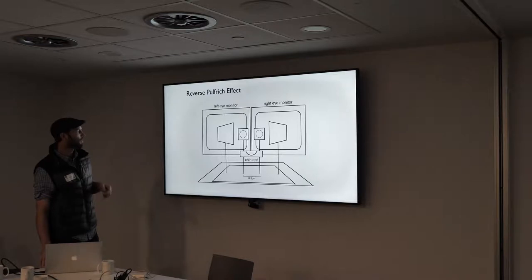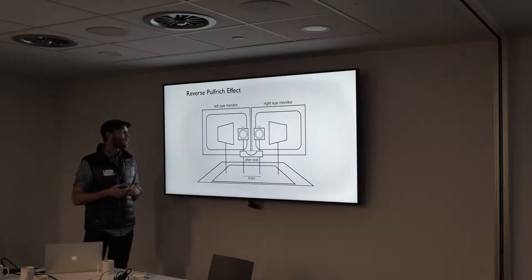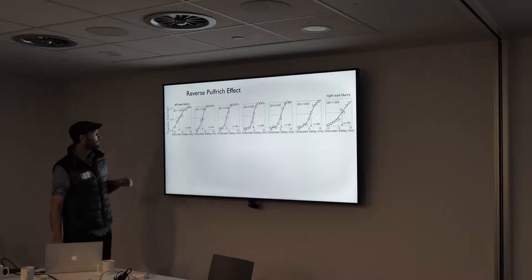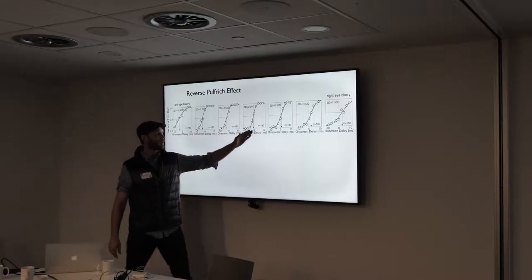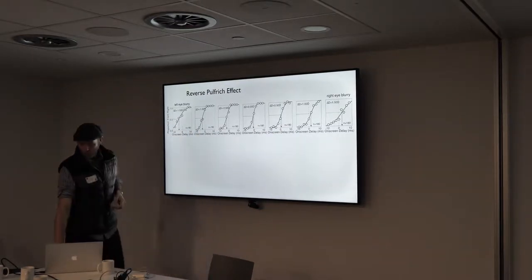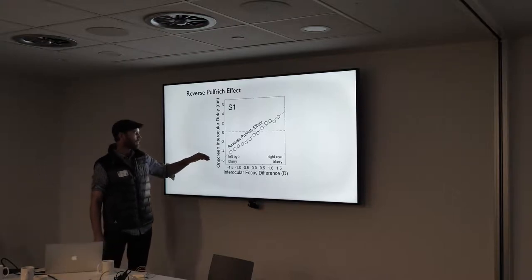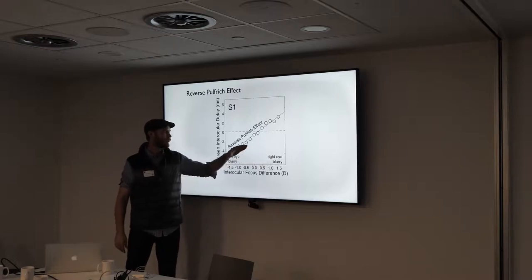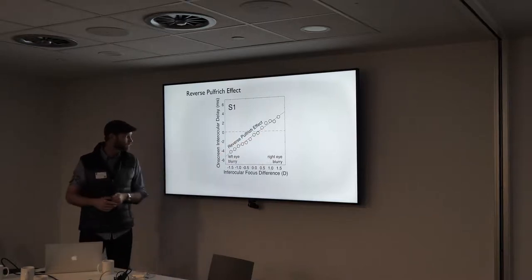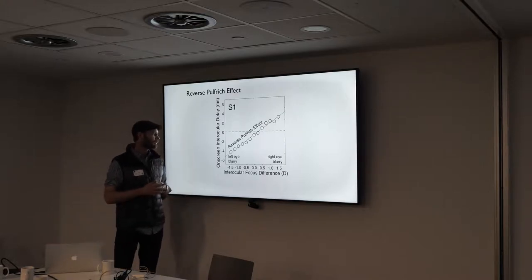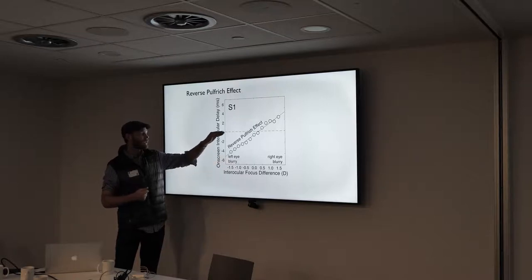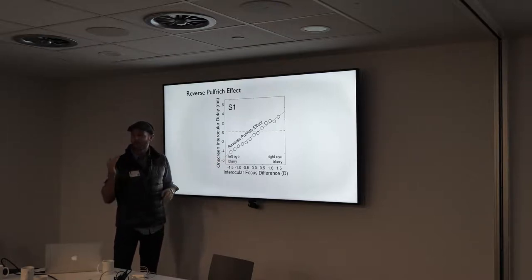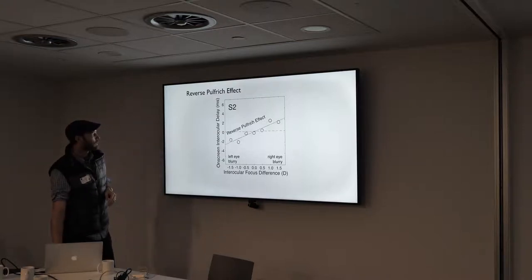To measure this, we used trial lenses to introduce blur differences and repeated the experiment. Here are seven of thirteen psychometric functions for one observer — you'll notice the point of subjective equality marches in the other direction as you go from left-eye blurring to right-eye blurring. There's now a positive slope instead of a negative slope, confirming that when the left eye is blurry it's processed more quickly.